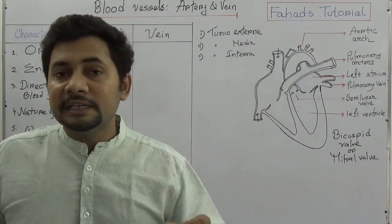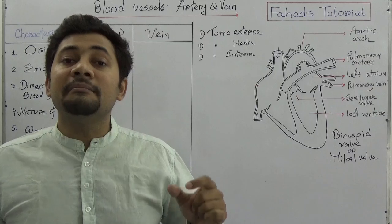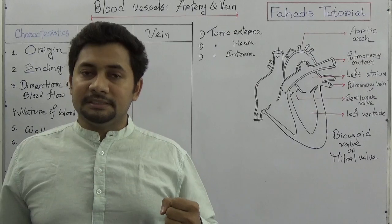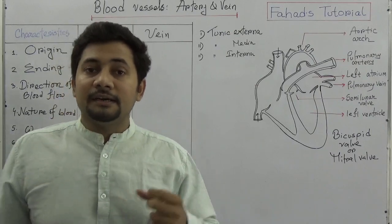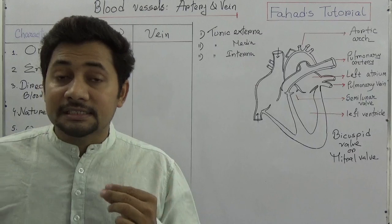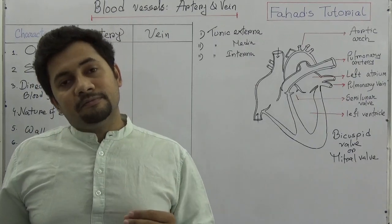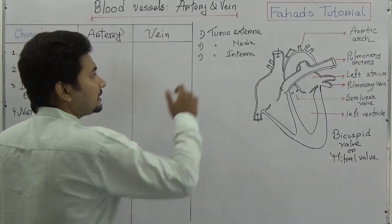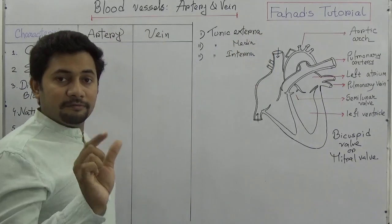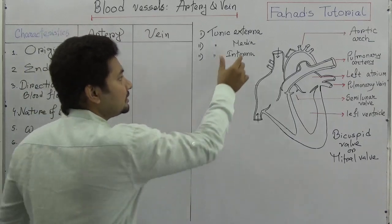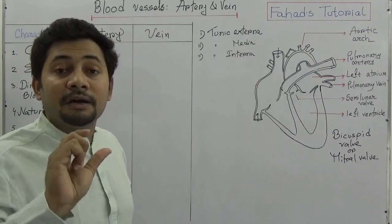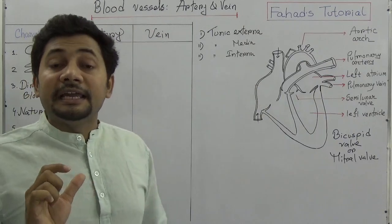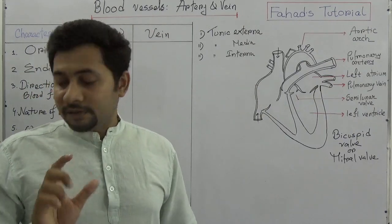In both arteries and veins, the middle layer — the tunica media — is made up of involuntary circular muscles. The inner layer, the tunica interna, is made up of endothelial tissue. So to summarize: tunica externa is connective tissue, tunica media is involuntary circular muscle, and tunica interna is endothelial tissue.